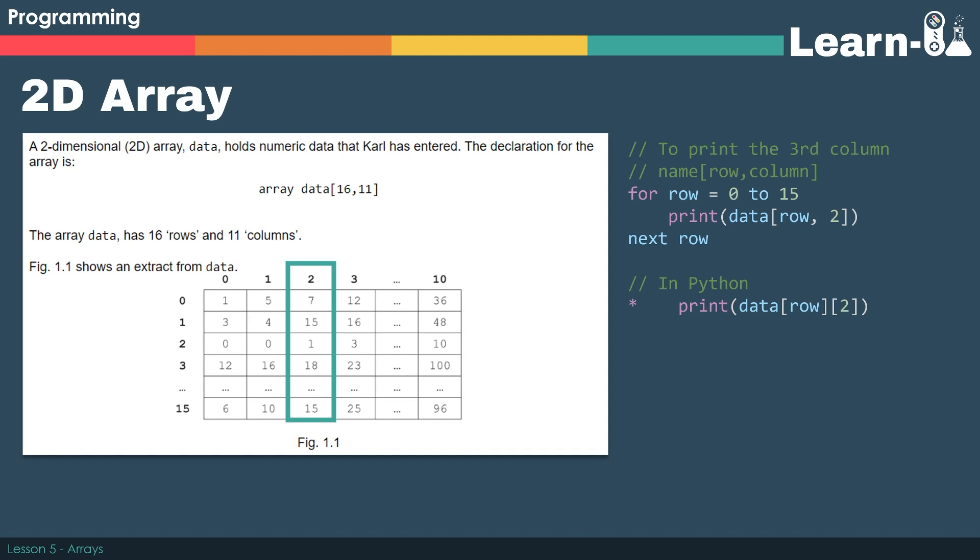To access data in a 2D array quite often we can use a for loop, because a for loop is count controlled and we know exactly how many rows or columns there are in an array. We can specify how many loops we'd like to go through.